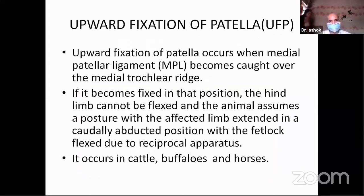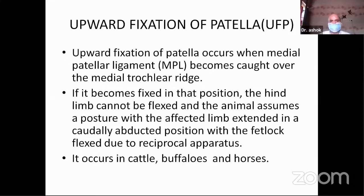As all of you know, upward fixation of patella occurs when the medial patellar ligament becomes caught over the medial trochlea region of the femur. If it becomes fixed in that position, the hind limb cannot be flexed and the animal assumes a posture with the affected limb extended in a caudally abducted position, with the fetlock flexed due to the reciprocal apparatus. The condition can occur in cattle, buffalo, as well as in horses.